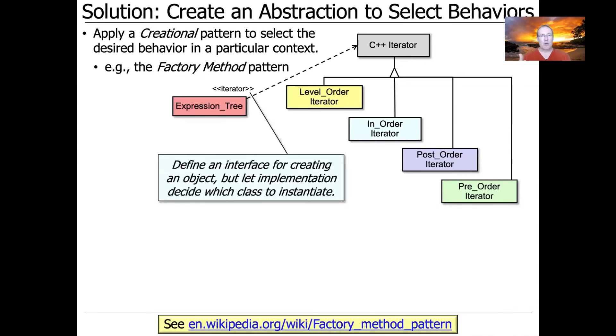Now, to make this really work properly, you need to add a few more patterns. So we're going to end up applying some creational pattern, like the factory method pattern, in order to make the appropriate type of iterator. And I think by now you've probably guessed that that's going to be done with the begin and end methods that are implemented as factory methods on the underlying expression tree. So that gives us an interface that's a common interface, but then the implementation will decide which class to actually implement.